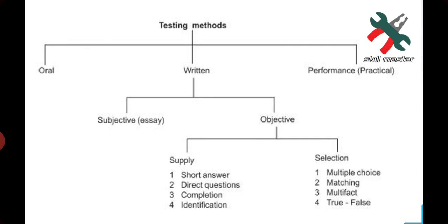Under supply type, the first one is short answer type test, then direct questions, completion type test, and identification type test. Under selection type, the first one is multiple choice, next is matching, then modified, and after that true and false. We will see each of these one by one — how these tests work, their characteristics, and how we define them.